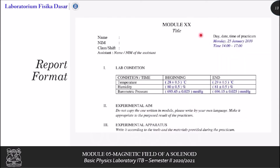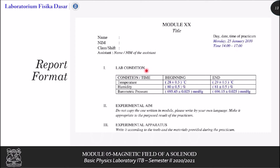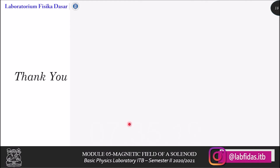Lastly, I'll explain about the report format for the basic physics practice. In the upper middle, write the module number and title. On the upper left, write your name, class and shift, and the assistant of your practice. On the upper right, write the day, date, and time of the practical. The report should include the lab condition, experimental aim, experimental apparatus, a brief theory no more than half a page, data and processing including the data given to you, analysis and discussion, and the conclusion from this experiment. That's all for this third segment video. Thank you for your attention.